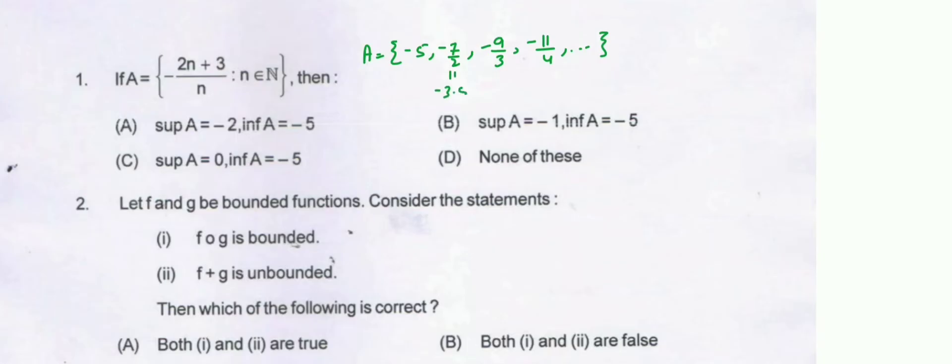So a equals: for n=1, minus 5; for n=2, minus 7/2; for n=3, minus 9/3; for n=4, minus 11/4, and so on. Minus 7/2 equals minus 3.5, minus 3, minus 2.75.